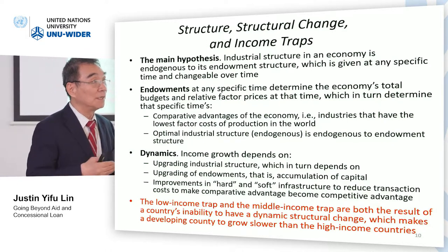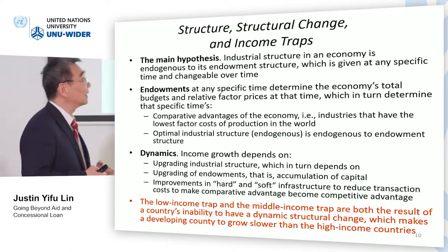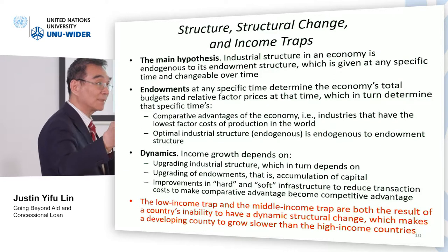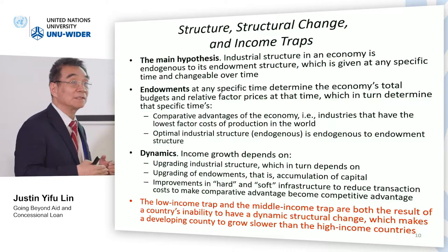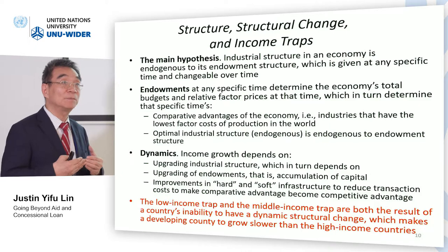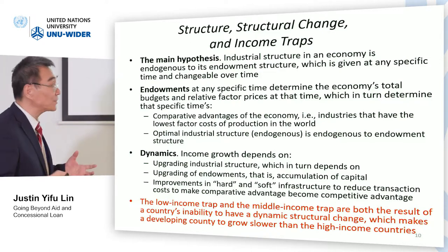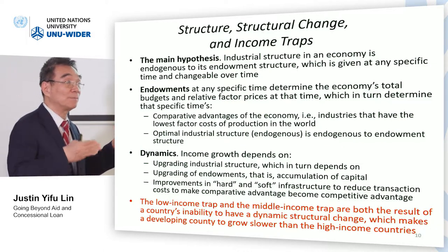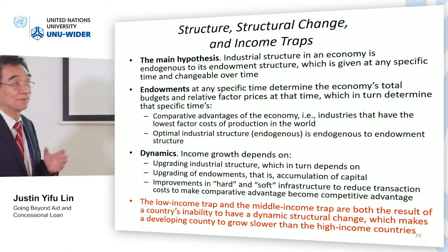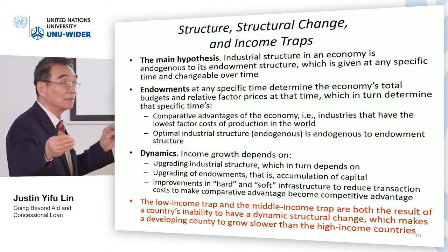If you develop your technology and industry according to your comparative advantages, the factor cost of production will be the lowest — this is the best industrial structure. To raise income, you need to move from low value-added, labor-intensive manufacturing to higher value-added manufacturing. But since industrial structure is endogenous, to move up the industrial scale you need to accumulate capital, which changes your endowment structure and leads to industrial upgrading. In this process, you also need to improve infrastructure, because more capital-intensive industry requires larger market networks, reducing transaction costs and improving competitiveness.